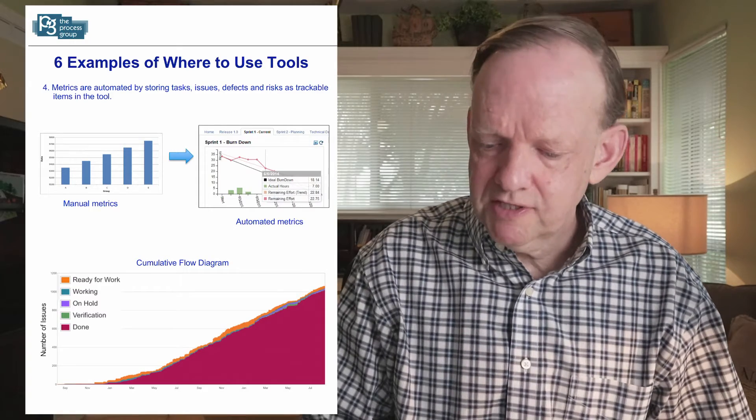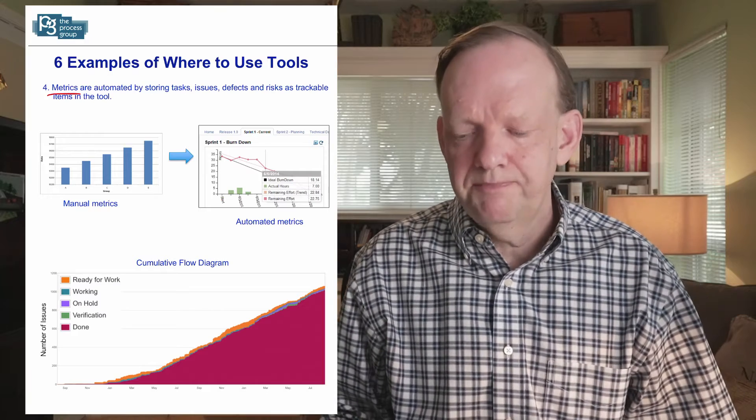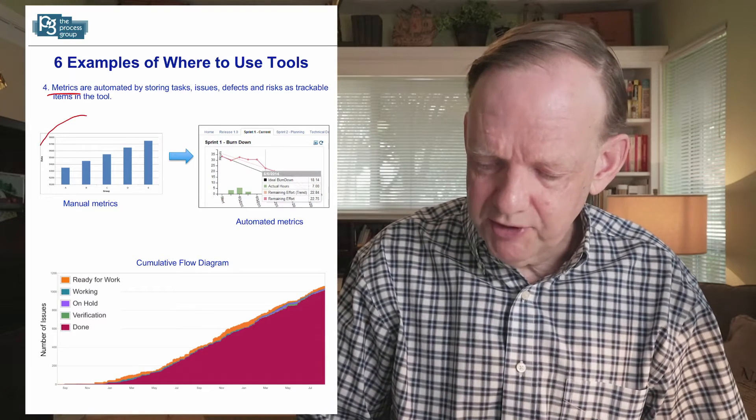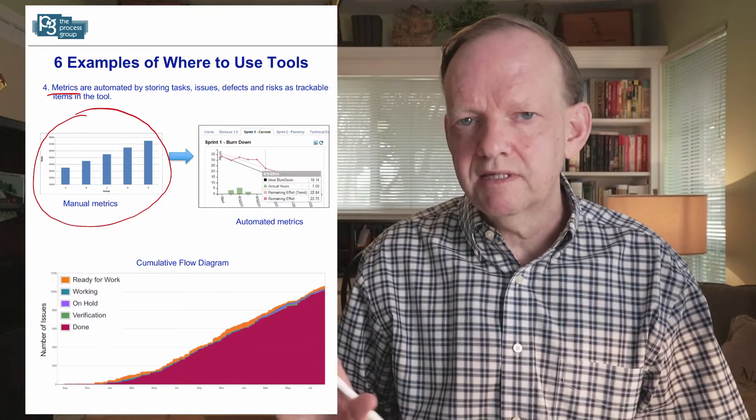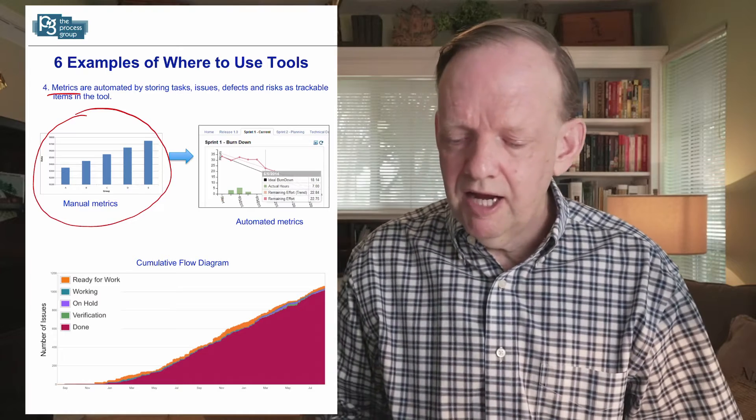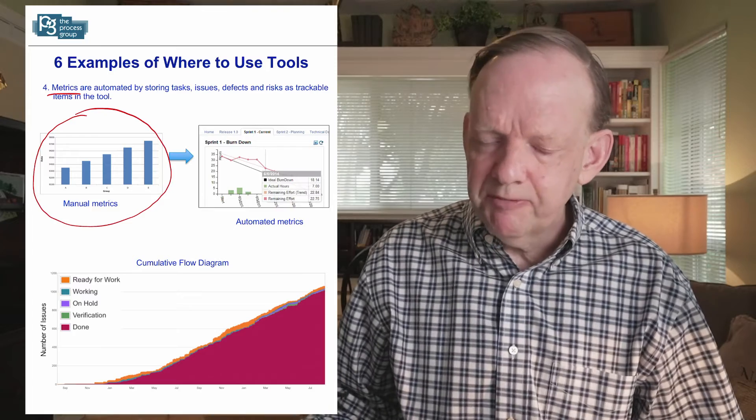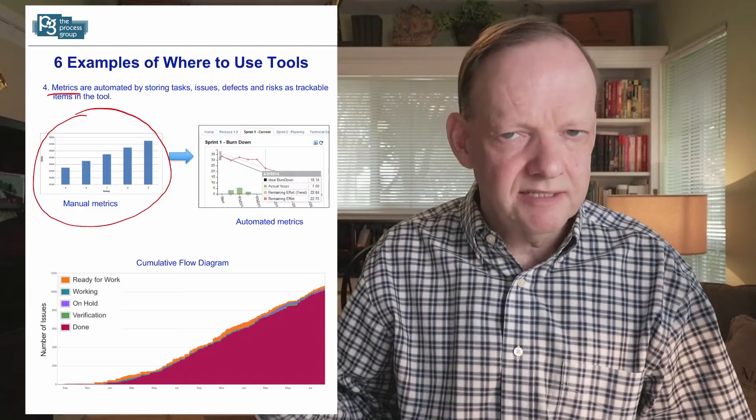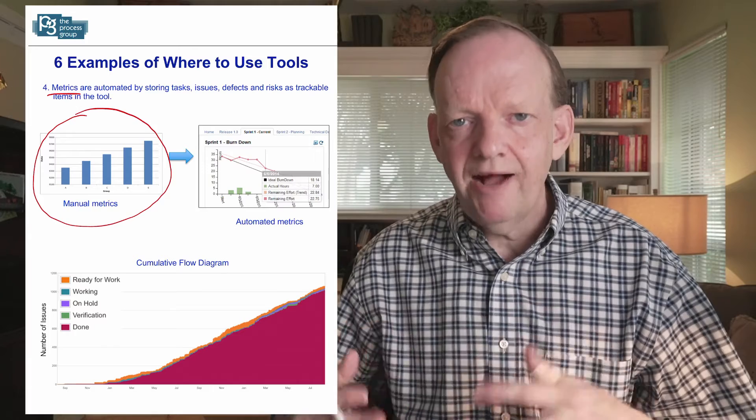Now, number four is metrics. Metrics are very useful to figure out where you stand and look for trends. But metrics can be very expensive to measure, calculate, and track, particularly if you're doing it manually. So if you are taking a spreadsheet and then recording every month or every week a particular data by tapping it in, yes, you can do it and get good results out of it, but it takes a lot of time to do that and very error-prone.